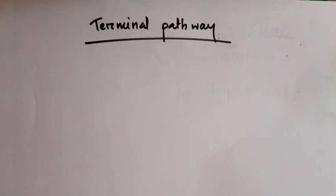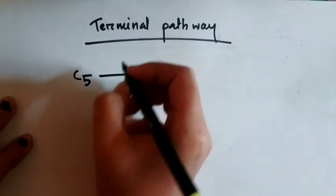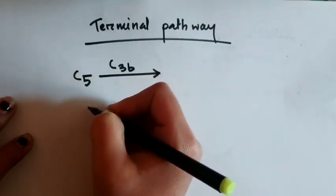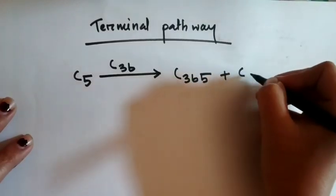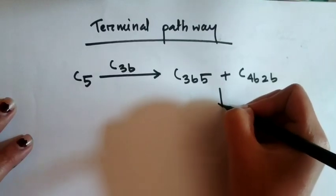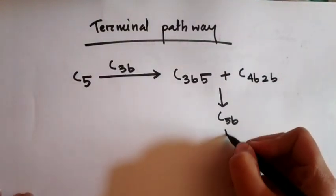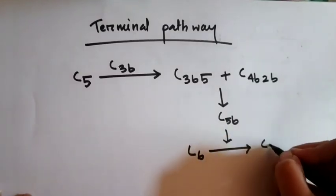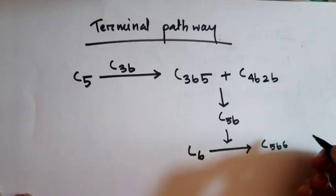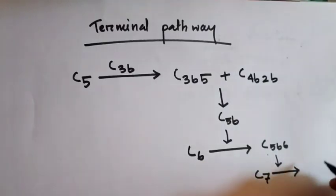The terminal pathway starts with the activation of C5 complement protein. C5 is activated by the action of C3B to form active C3B5 protein, which then conjugates with previously activated C4B2B to form active C5B molecule. C5B then acts on C6 to form active C5B6 complement protein, and C5B6 acts on C7 to form active C5B67 complement protein.